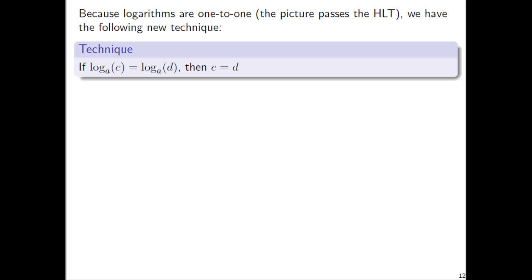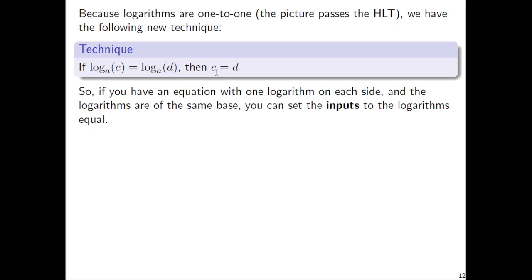Because logarithms are one-to-one — a logarithm function is a one-to-one function, meaning its graph passes the horizontal line test — we have the following new technique. It's very similar to what we saw for equations with exponents. If you have an equation with log, same idea: if log base a of c equals log base a of d, then you can just say that c is equal to d.